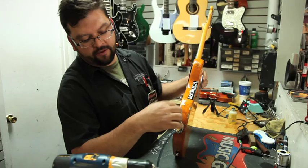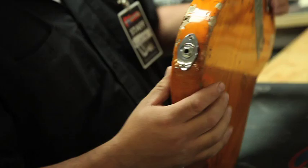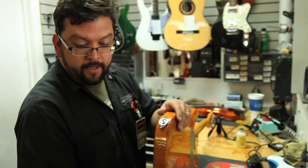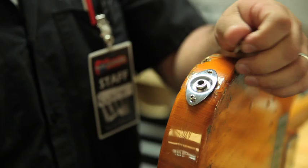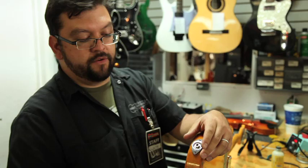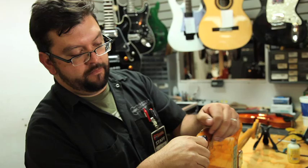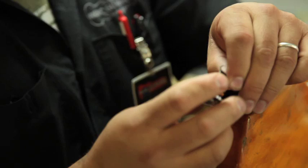We're going to replace the whole thing today. The first thing you want to do is grab your screwdriver and pull these two screws out. Depending on your actual Telecaster, you may have a different assembly. If you have the other assembly, it's a little more difficult.